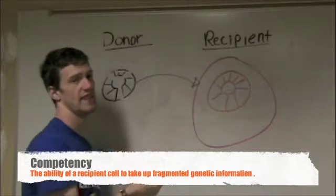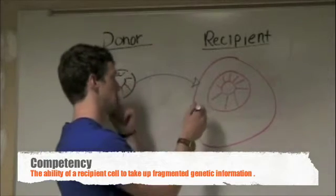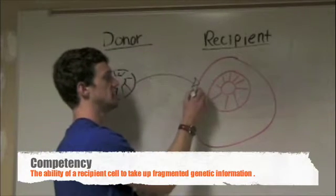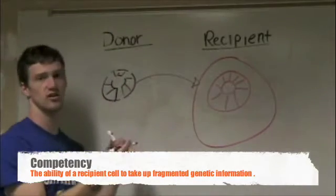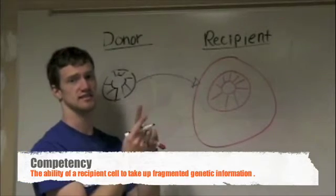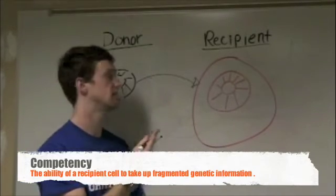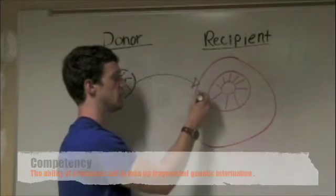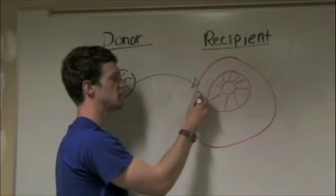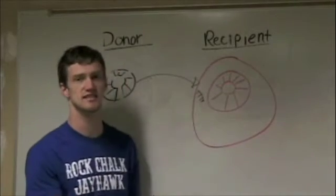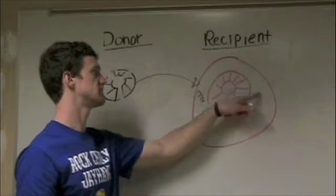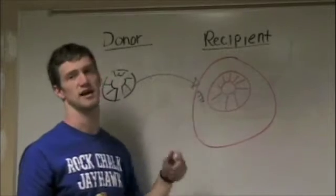At that point, the DNA is broken in half — it no longer has a double helix; it's only a single helix at this point. This is accomplished with endonucleases in the cell's cytoplasm.